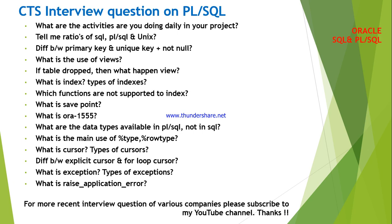This is a very simple question but most frequently asked. A primary key is the combination of both unique key and NOT NULL — it uniquely identifies a row or record in a relation, meaning it does not allow duplicate values or null values. A unique key will allow null values but not duplicate values. NOT NULL, as the name says, will not allow null values.